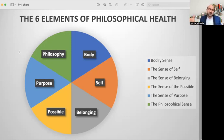Then, last but not least, the philosophical sense. So this is the overarching philosophy of your life. This is how you view the meaning of life, the meaning of your life, and your cosmology about why things exist. So these six elements are very important.